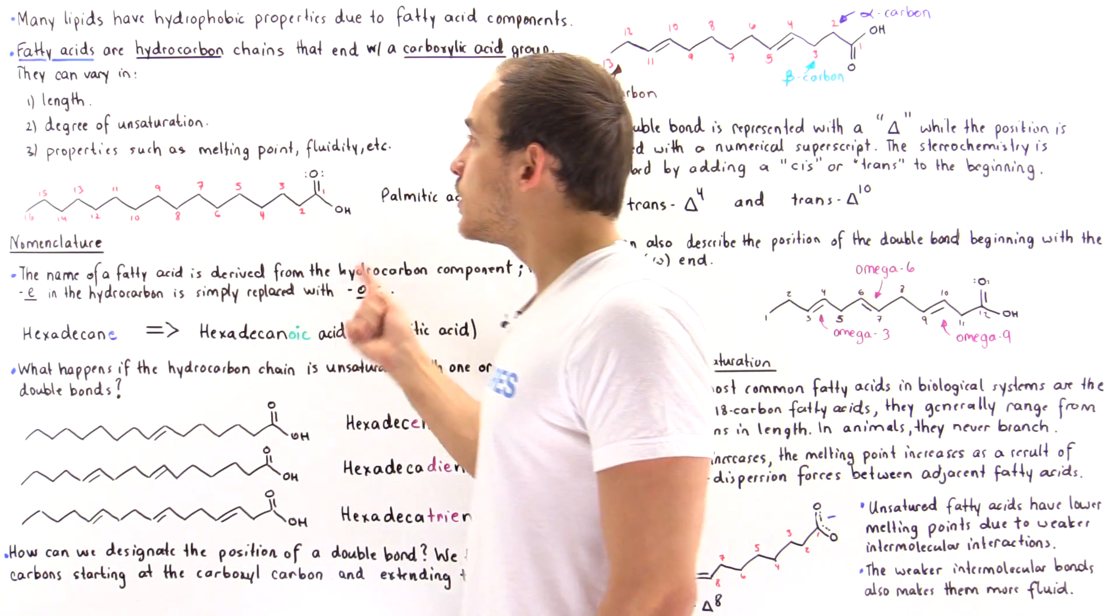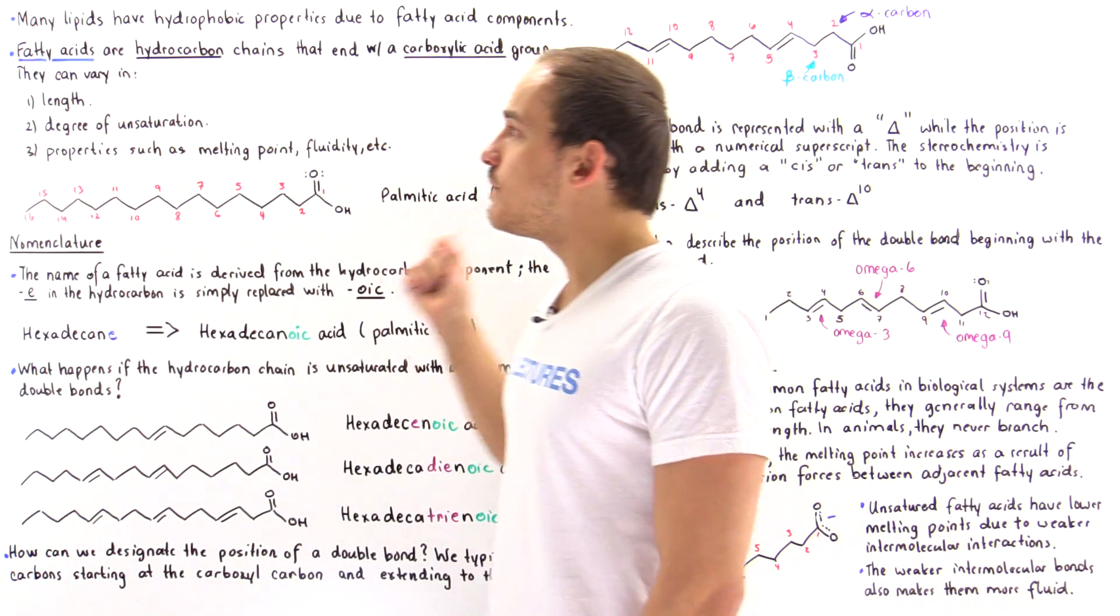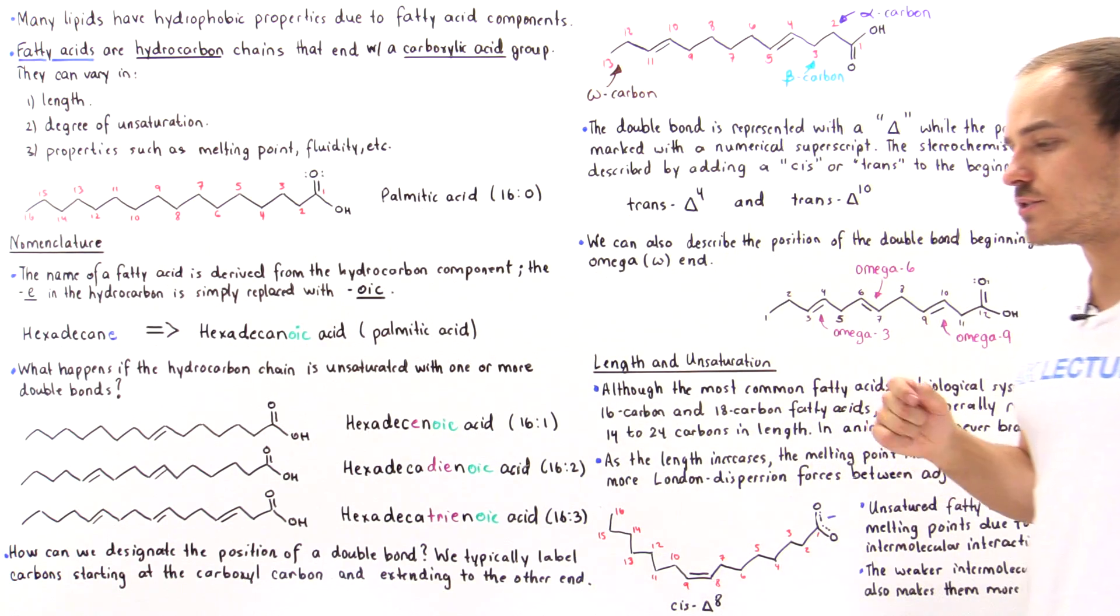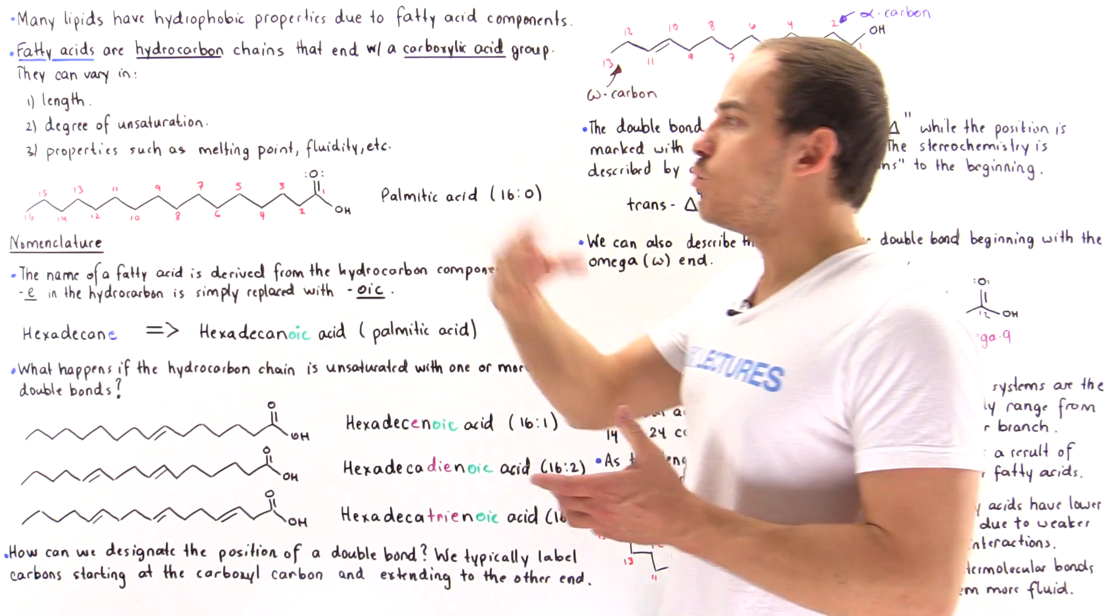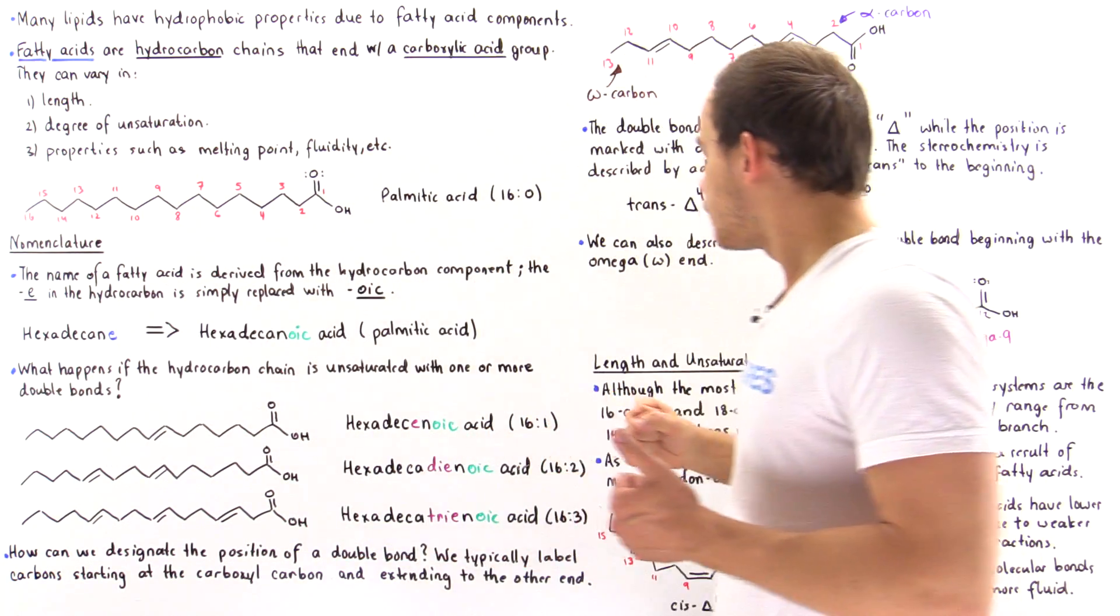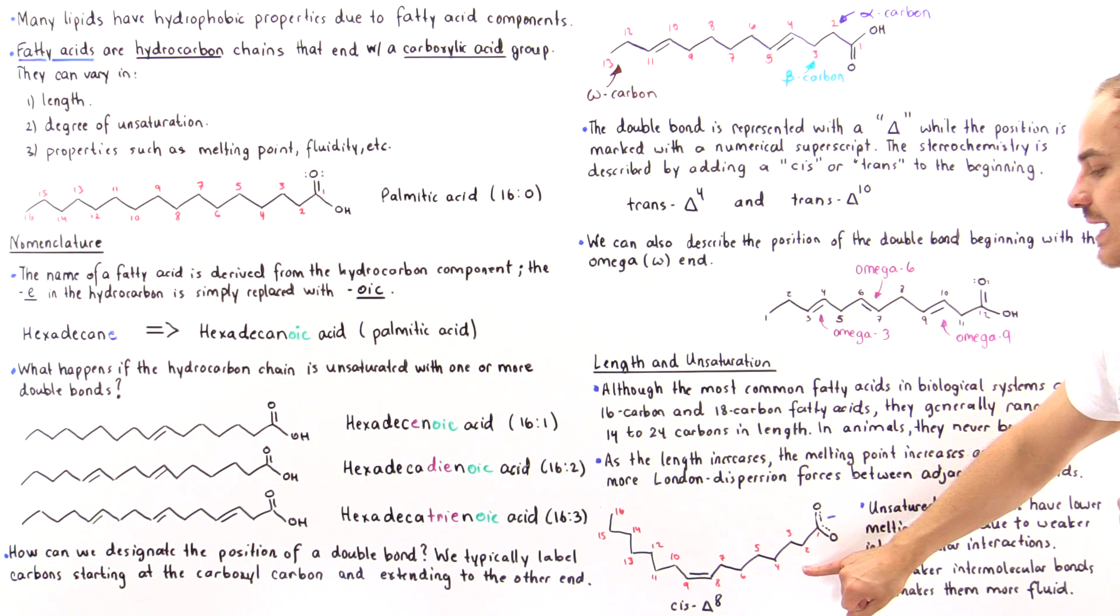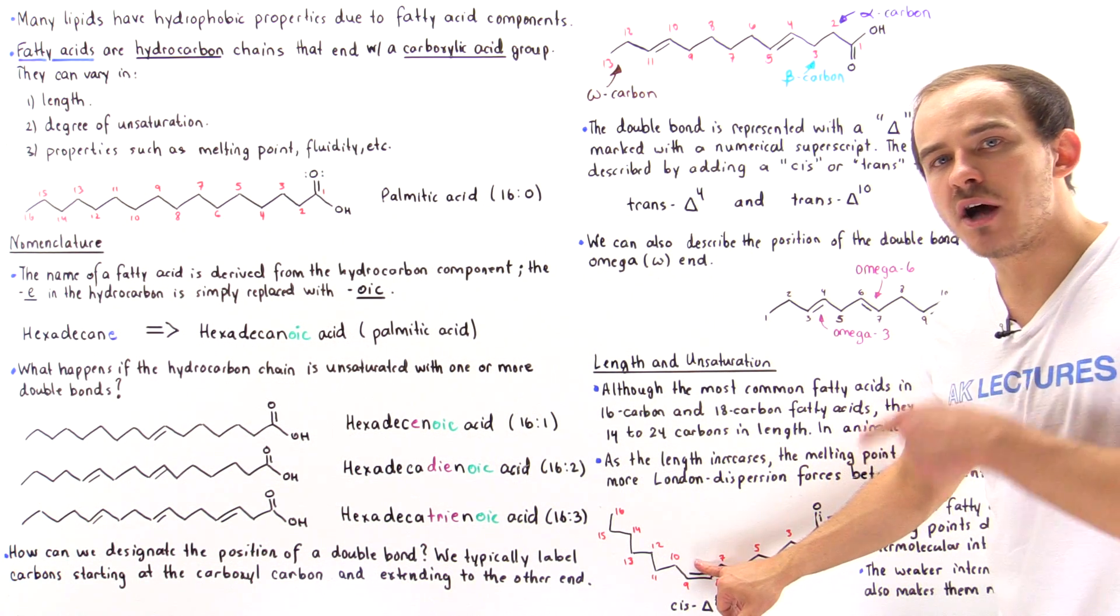Double bonds affect the melting point of that particular fatty acid. So let's suppose in one beaker, we have the following fatty acid without this double bond.